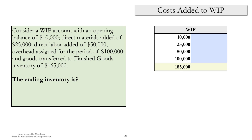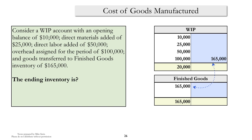Similarly, we add manufacturing overhead to work-in-process for $100,000, with the credit normally to an overhead control account — a topic we'll cover later in the course. Finally, some of the work-in-process is transferred to finished goods, resulting in a credit of $165,000 to work-in-process and a debit of $165,000 to finished goods. The key takeaway is that you should become familiar with tracking transactions using T-accounts, as it's a very important tool that accountants rely upon when solving these types of problems.